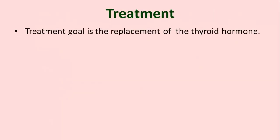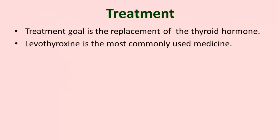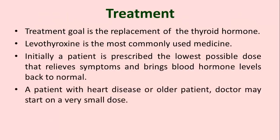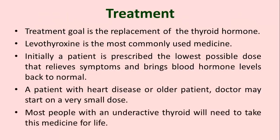The treatment goal is replacement of the thyroid hormone. Levothyroxine is the most commonly used medicine. Initially, a patient is prescribed the lowest possible dose that relieves symptoms and brings blood hormone levels back to normal. For patients with heart disease or older patients, the doctor may start on a very small dose. Most people with an underactive thyroid will need to take these medicines for life.